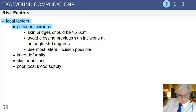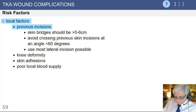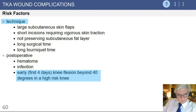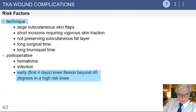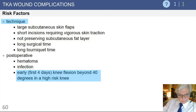If crossing a transverse incision, do so at a perpendicular 90-degree angle. Additional risk factors include patients with severe deformity, patients who have adherence of their skin to the deep structures, and poor local blood supply. As a rule, do not undermine the skin away from the subcutaneous tissue, as that can devascularize the skin. Raising subcutaneous flaps through the subcutaneous layer is important. Excessive traction, efforts to do less invasive procedures that compromise blood flow to the skin, and long surgical and tourniquet times can all be problematic.